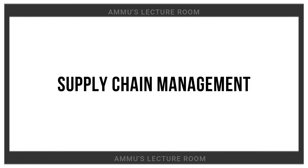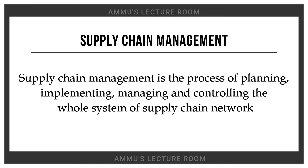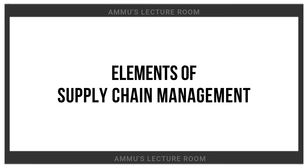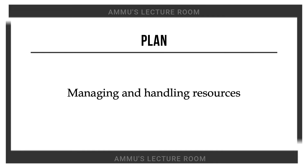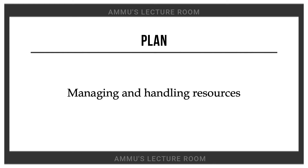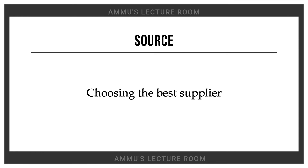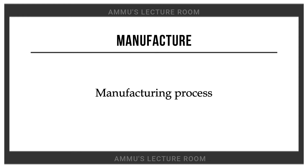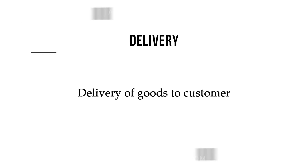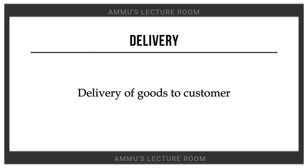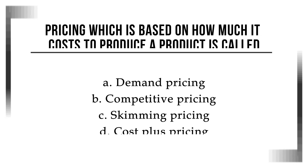Supply chain management involves a supply chain network. Elements include: Plan — plan, implement, manage, control the supply chain. Source — managing and handling, finding the best supplier. Manufacturing — covering the manufacturing process. Delivery — dealing with goods and delivering to customers.